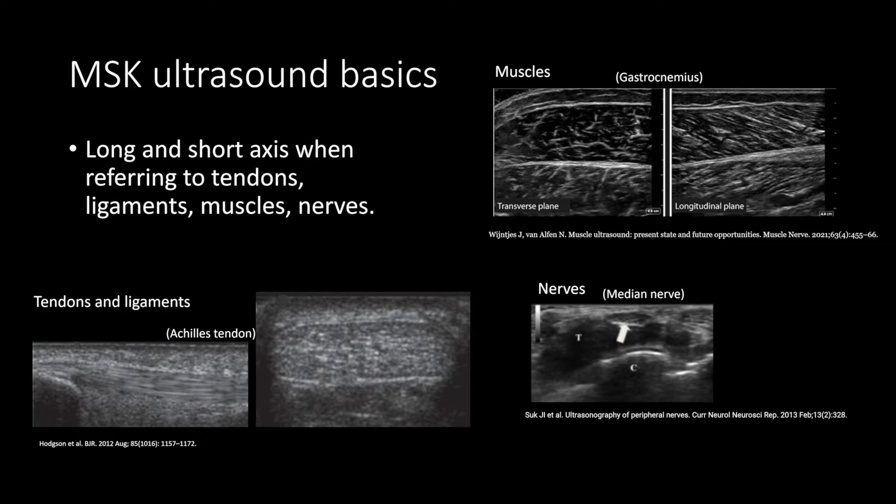Try to use the terms long axis or short axis when referring to the orientation of tendons, ligaments, muscles, and nerves. Regarding these structures, tendons and ligaments both have an echogenic fibrillar pattern. Muscles are hypoechoic with echogenic septations. Nerves have a fasciculated honeycomb appearance.